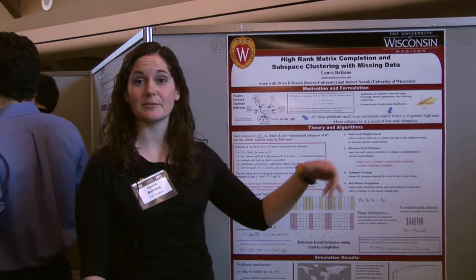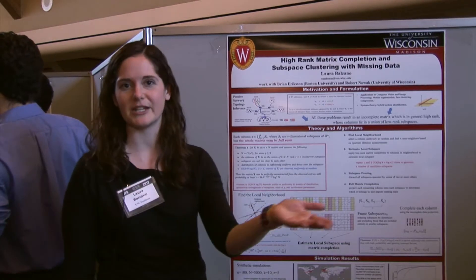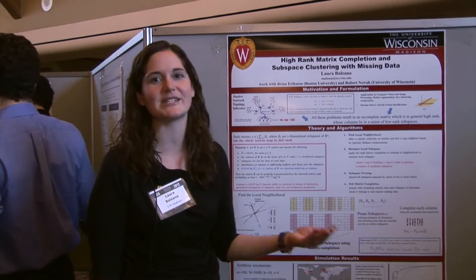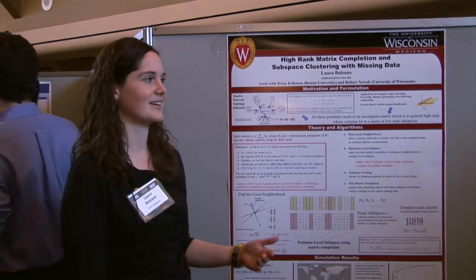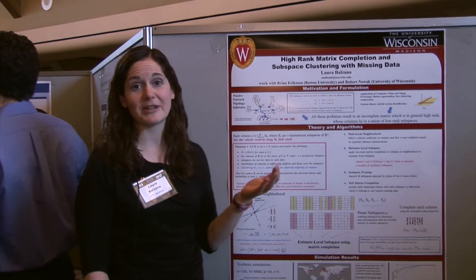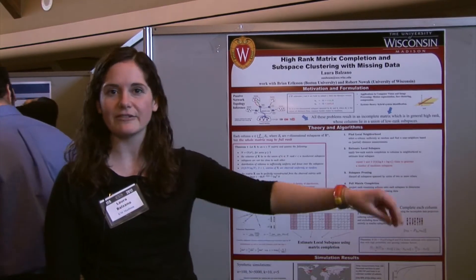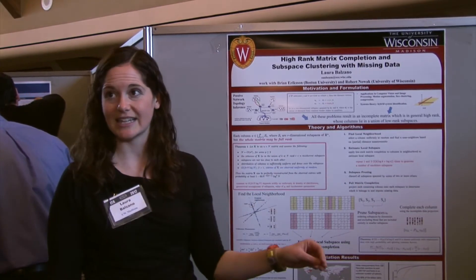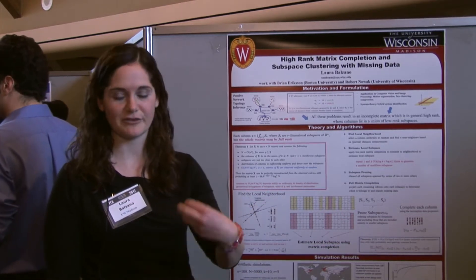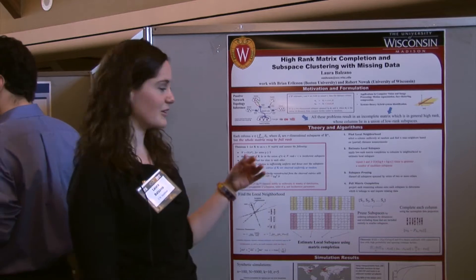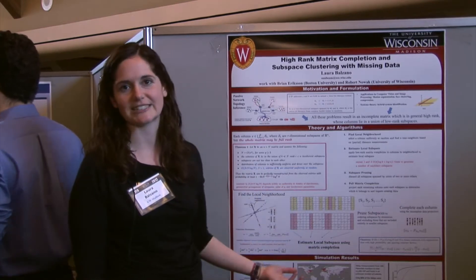Using that hop count information, it can build a tree out from the monitoring point to all the IP addresses that requested that website. You put monitors near many popular websites and can collect data from many different IP addresses — people who requested from CNN, YouTube, Facebook, and so on. The problem is that each monitor will not see every IP address; it will only see the ones that requested packets from that website. So what you get as a result is an incomplete matrix of hop counts.